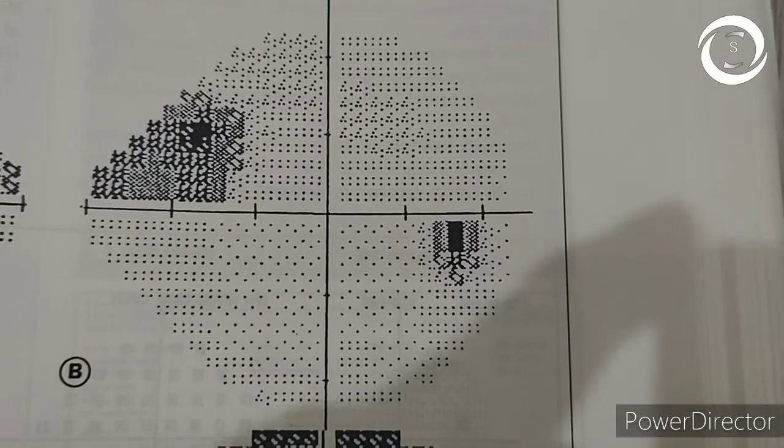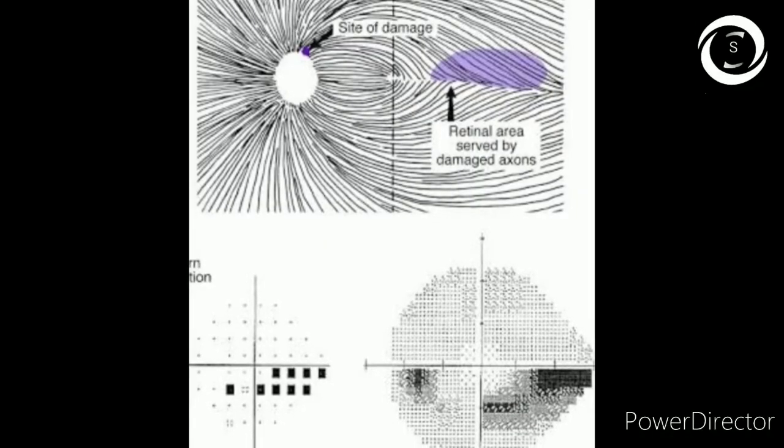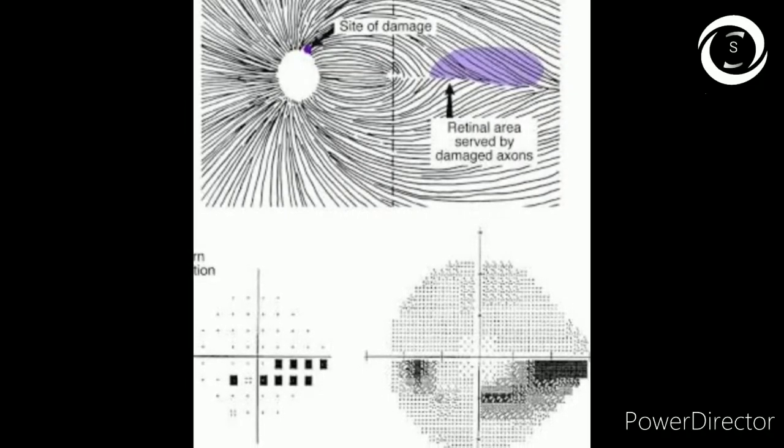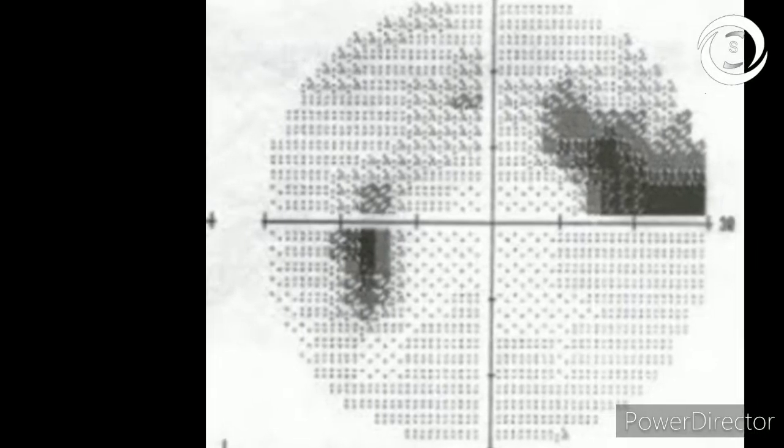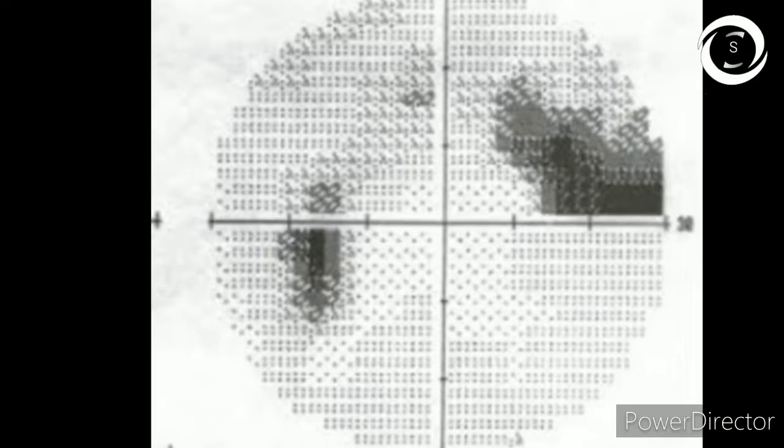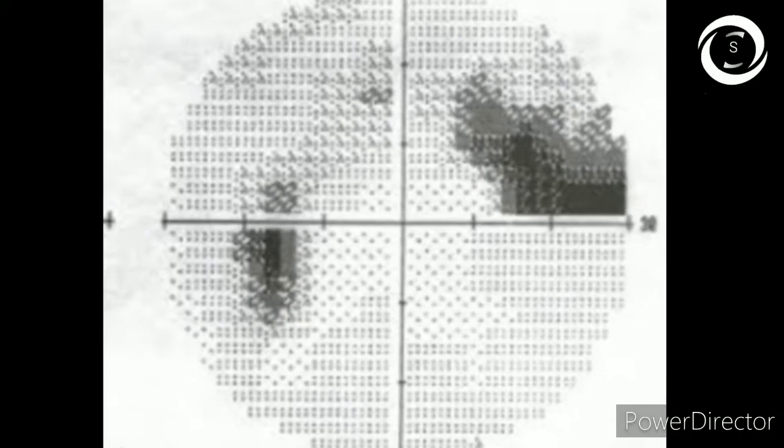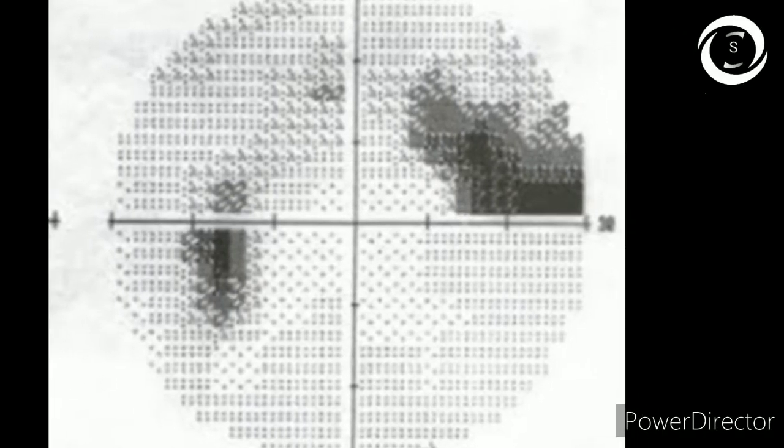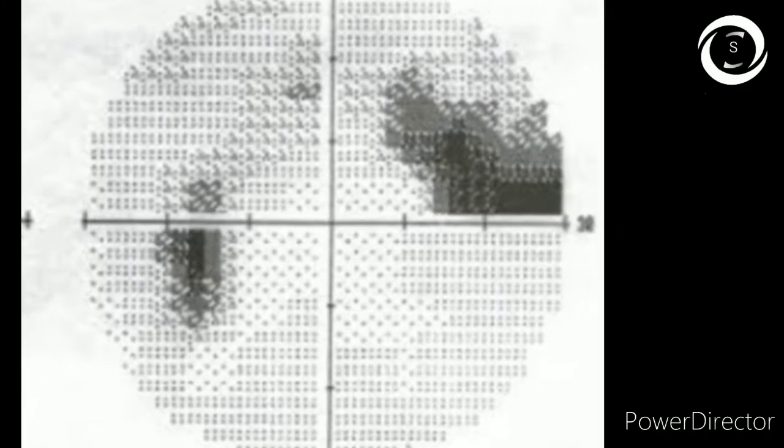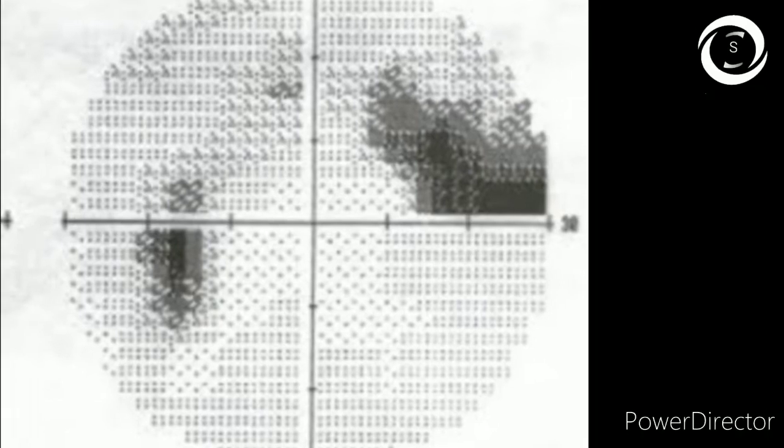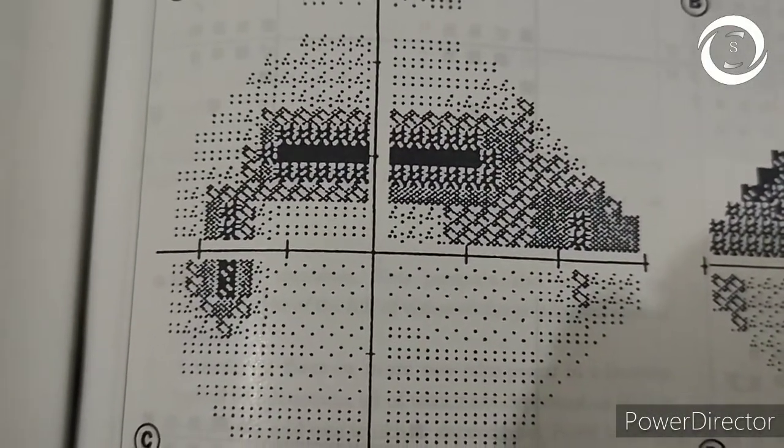As visual fields deteriorate in glaucoma, more paracentral defects are formed. When the paracentral scotomas coalesce with the blind spot, that is called sedal scotoma. Look at this visual field: blind spot on the left side below horizontal meridian and joined by the paracentral scotoma above horizontal meridian. You can also appreciate the enlarging nasal step on the other side joining with nasal paracentral scotoma. This has got sedal and nasal step.